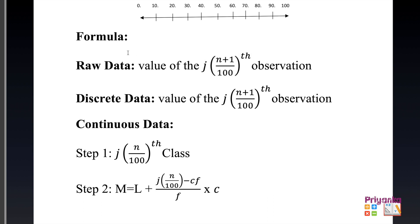Raw data and discrete data share the same percentile formula, but the formula changes for continuous data. Always be sure which type of data is given. For continuous data, j is placed in the formula and divided by 100. The critical rule: for raw data and discrete, use n+1; for continuous, use n only. This is where most students make mistakes.